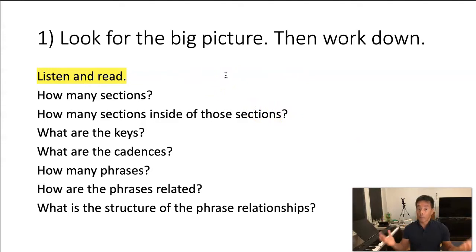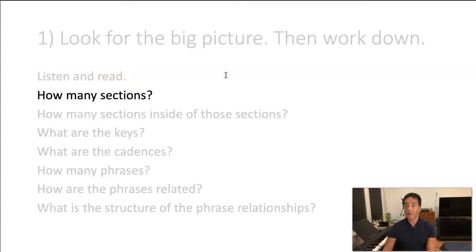you should look at the overall big picture. How many sections are there in the entire minuet? Then inside of those sections, you're going to see smaller sections. How many sections inside of those sections? What are the keys? What are the cadences? How many phrases and how are they related? And what is the structure of these phrase relationships? We're going to take this step by step.